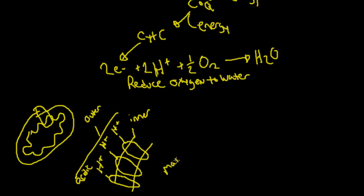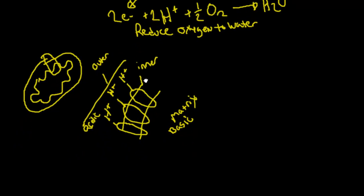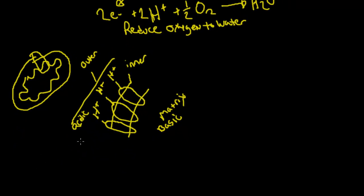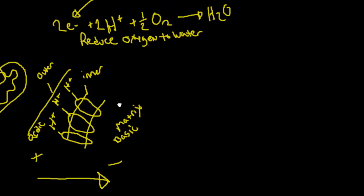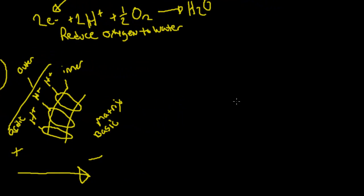We're going to make the matrix a little bit more basic. Those hydrogens want to get back in here and balance out the charge — this side is a little bit more positive, this side a little bit more negative — so we have an electrical gradient. Those hydrogens want to get back in and balance that out, and in the process they're going to help generate some ATP.